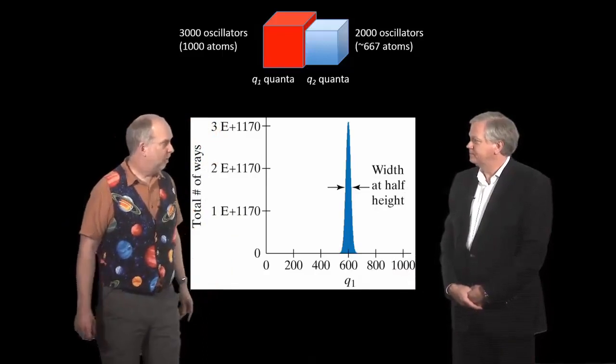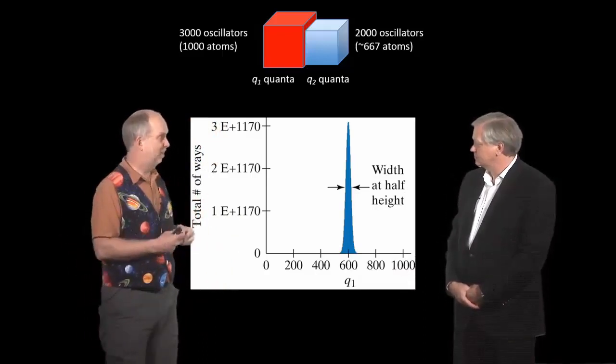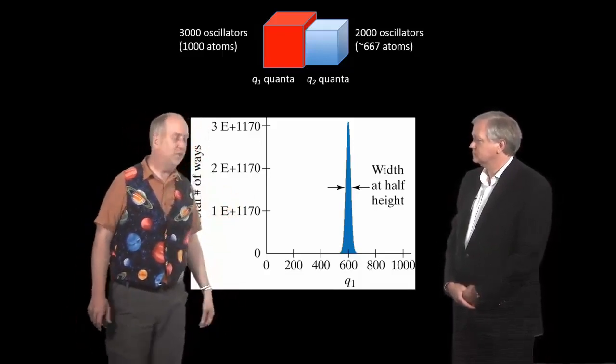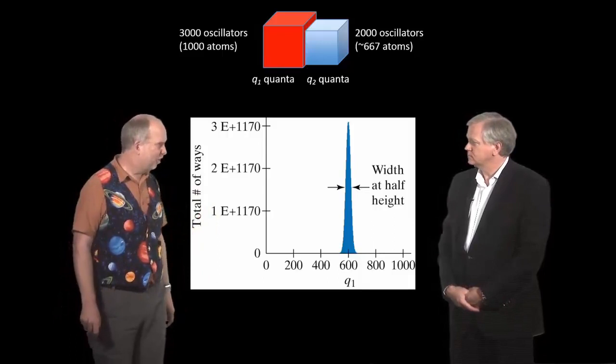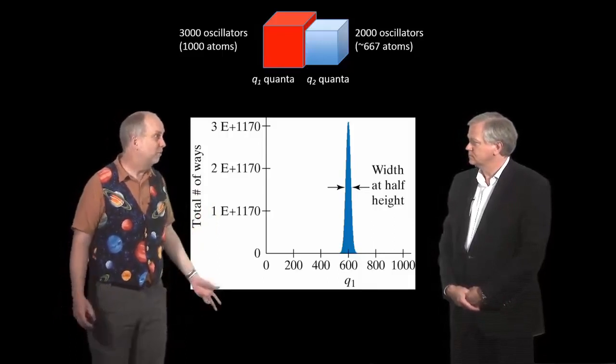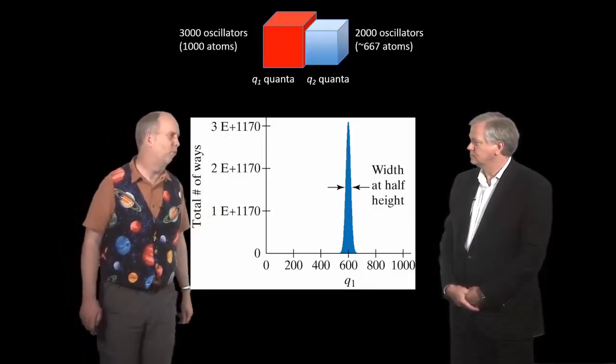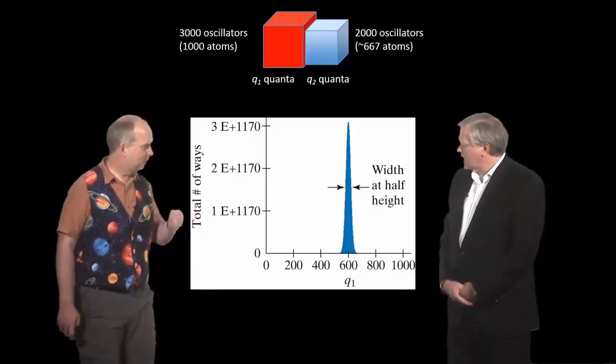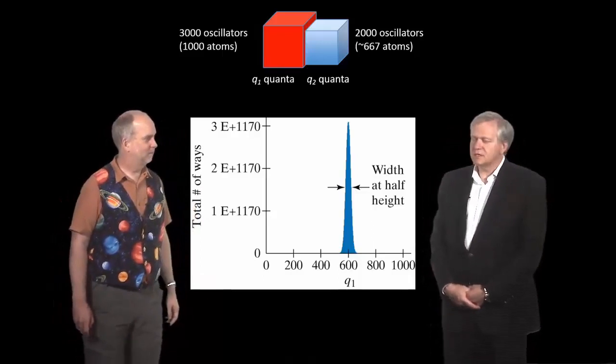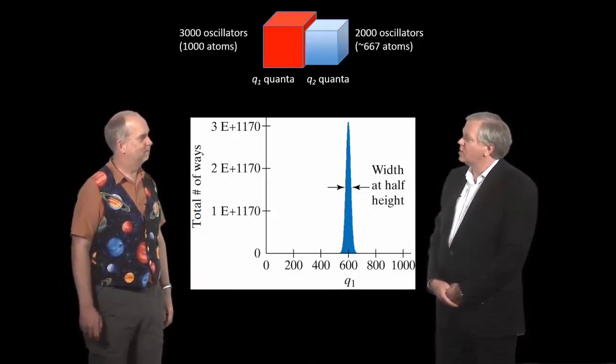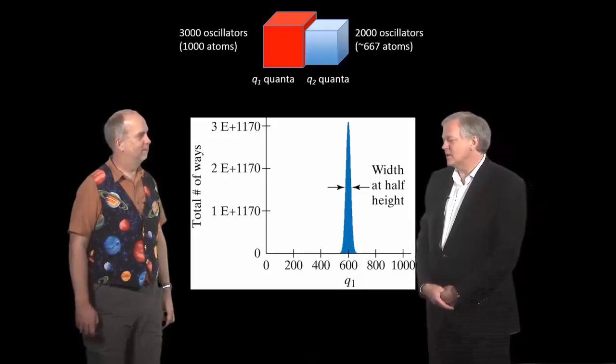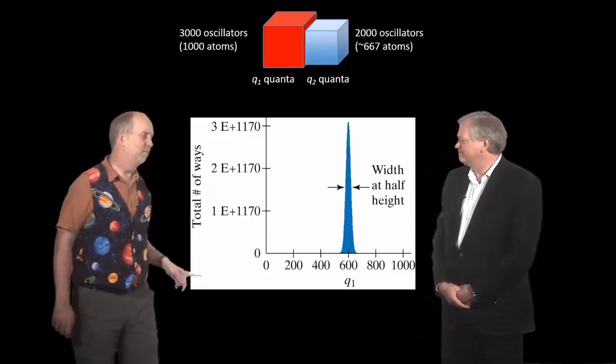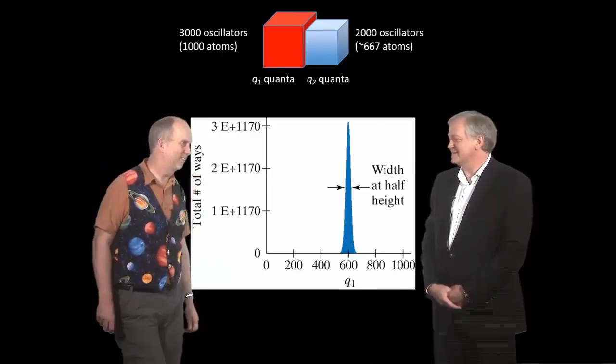So in principle, you could have two blocks and all the heat goes into one and the other, but the odds against it are the factorial of 10 to the 23 or something like that. So do you call that yes there is a chance, or do you call it no? Yes there is a chance, but when the chance is that small, in some ways no is actually the more honest answer. I have to admit, Paul, in life, my rule of thumb is if the chances are less than being struck by lightning on a given day, then I say it just doesn't happen. That's the way I do it. And this makes being struck by lightning look like the most common thing in the universe.